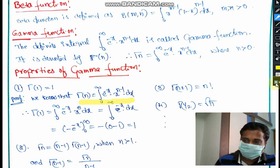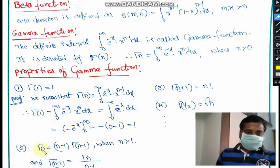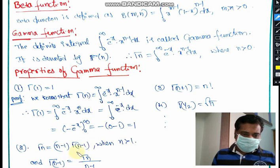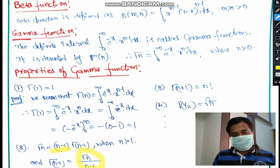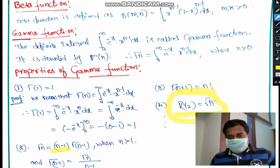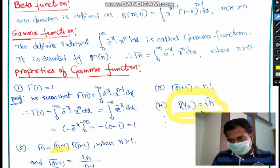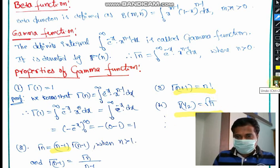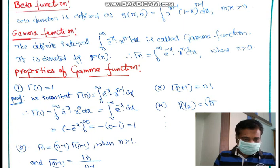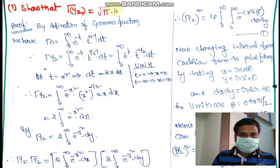Another important property: Γ(n) = (n−1) · Γ(n−1), where n > 1. From this, Γ(n−1) = Γ(n)/(n−1). Also, Γ(n+1) = n! And one more key property: Γ(1/2) = √π. This is a very common university exam question worth five marks — 'Prove that Γ(1/2) = √π.'